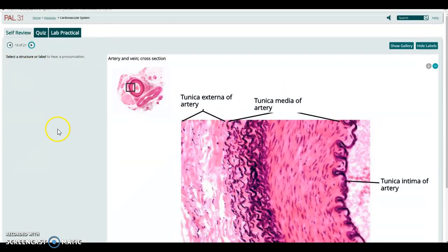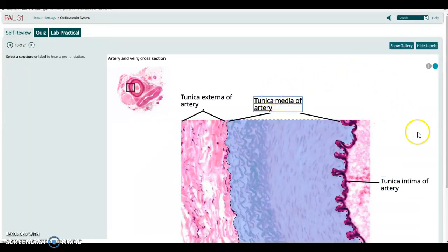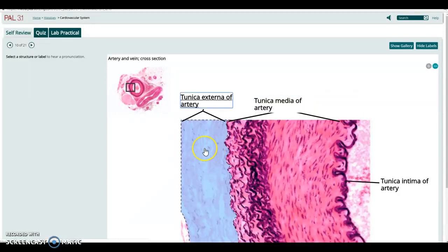In this slide, we're just seeing the artery much closer up where you can see that tunica intima or the endothelial simple squamous lining of it. The tunica media with its smooth muscle cells and elastic fibers and the tunica externa connective tissue around the outside.